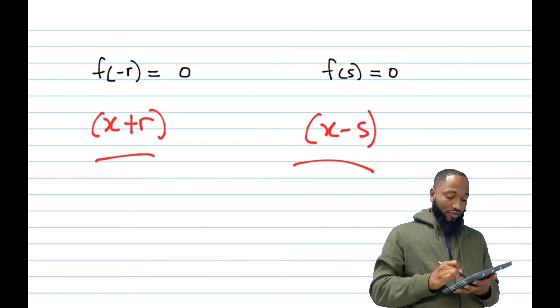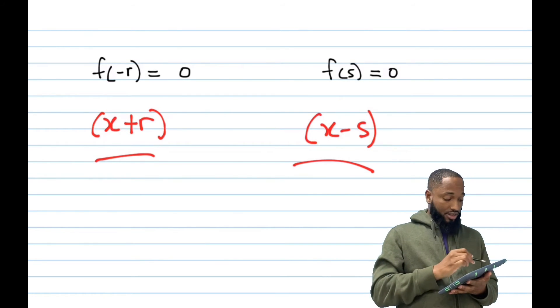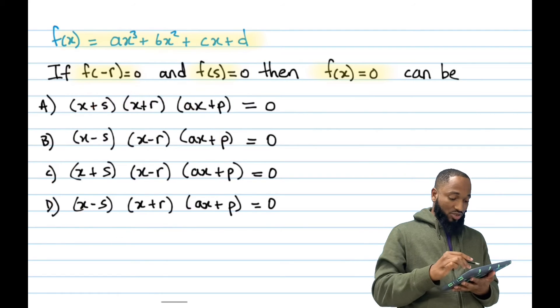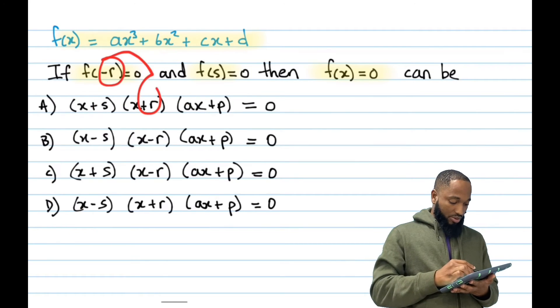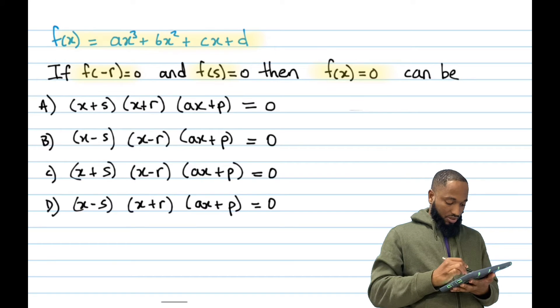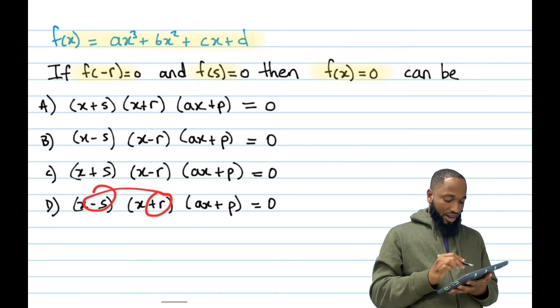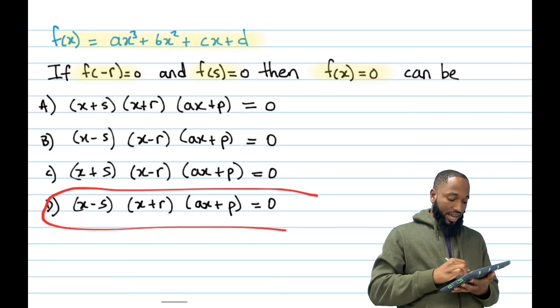That's looking good. So we have two factors, we just found the answer there. Because all you need to do now is look for these two factors, negative r positive, positive negative. And there it is. So this must be the answer.